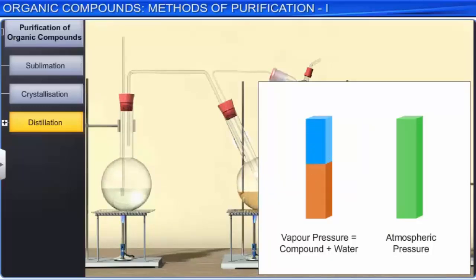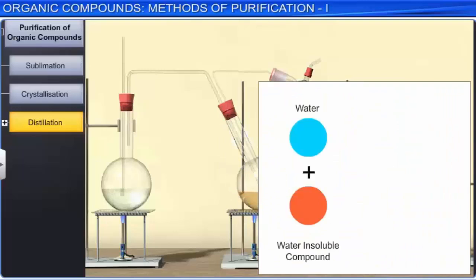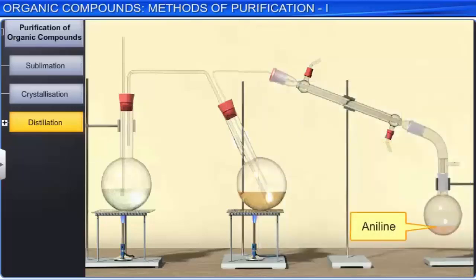Since the vapor pressure of the organic liquid is lower than atmospheric pressure, the organic liquid vaporizes at a lower temperature than its normal boiling point. Hence, if one of the substances in the mixture is water and the other is a water-insoluble but steam volatile substance, then the mixture will boil close to but below 373 Kelvin. Aniline is separated by this technique from an aniline-water mixture.